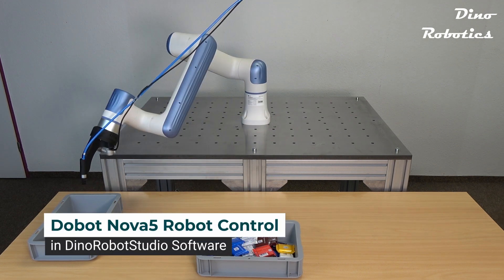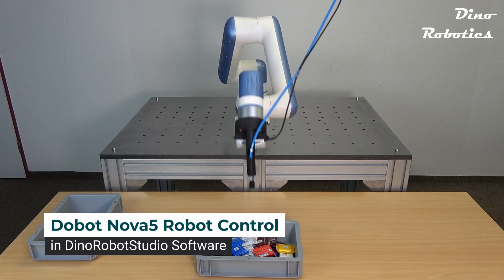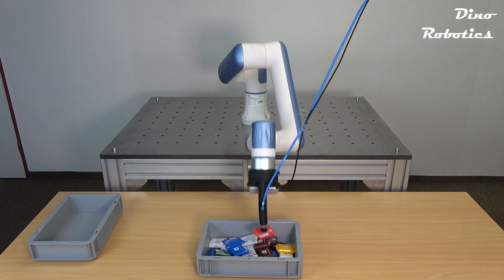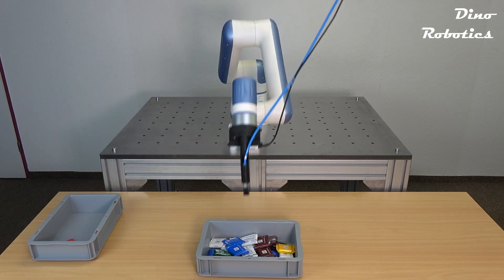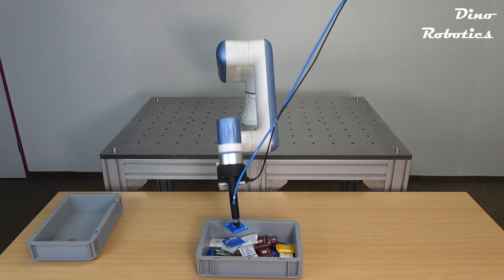The Dobot Nova 5 sets new standards in the world of Cobots. With a payload of 5 kilograms and a reach of 850 millimeters, this lightweight, user-friendly Cobot is specifically engineered for physiotherapy applications.